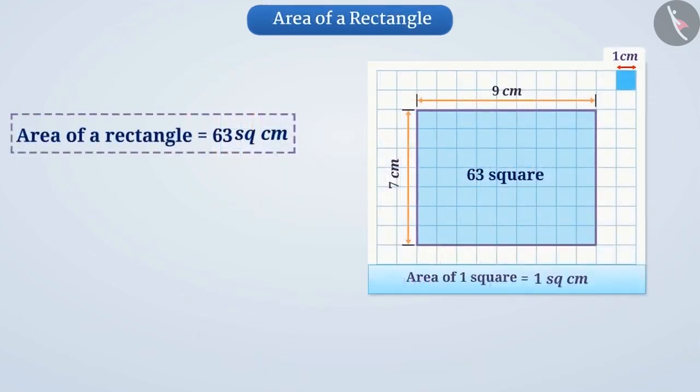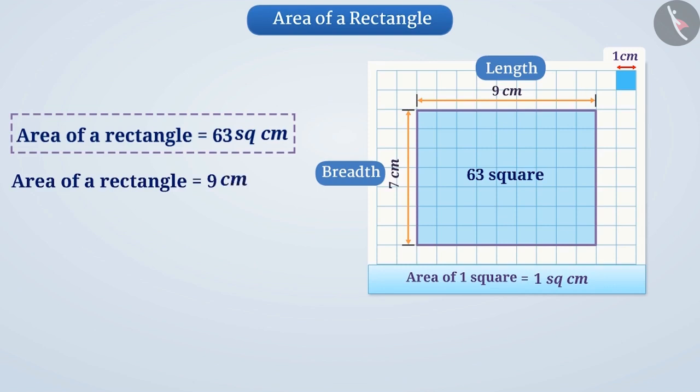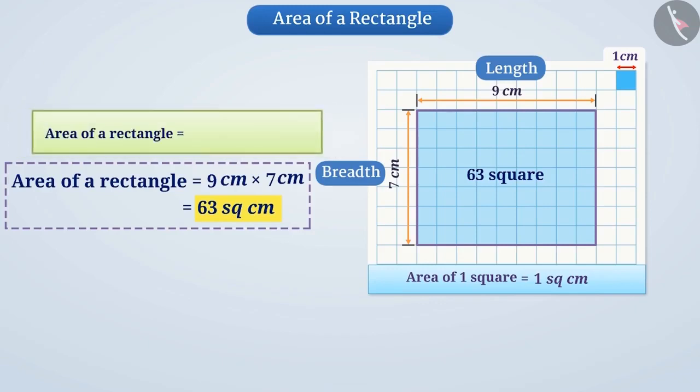Again, if we multiply the length and breadth, we get the area of the rectangle: 9 cm multiplied by 7 cm equals 63 cm². Thus, we can say that the area of a rectangle is length multiplied by breadth.